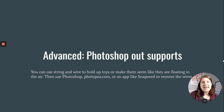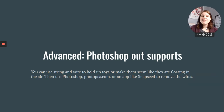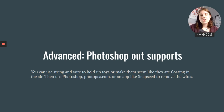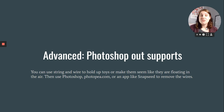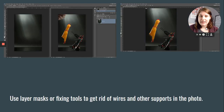Lastly, this is an advanced thing you do not have to attempt: you can Photoshop out supports. Use string and wire to hold up toys or make them seem like they're floating in the air, then use Photoshop, Photopea.com, or an app like Snapseed to remove the wires. I use Snapseed on my iPhone all the time — it's super easy to use.